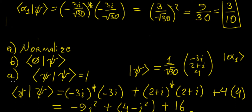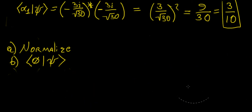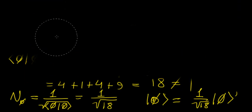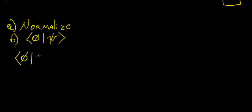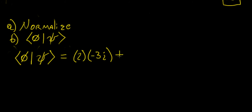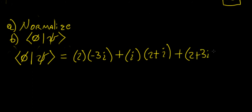The second part of the problem is finding the inner product of the two eigenfunctions, ⟨phi|psi⟩. We take the complex conjugate of the elements of phi and multiply by the corresponding elements of psi. The first term is 2* × (−3i) = −6i. The second term is (−i)* × (2+i) = i(2+i) = 2i + i². The third term is (2−3i)* × 4 = (2+3i) × 4 = 8 + 12i.